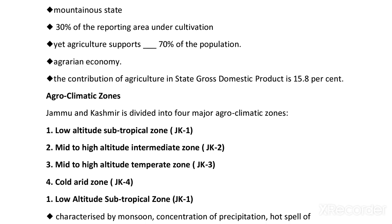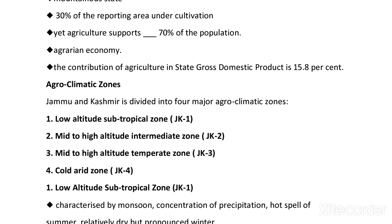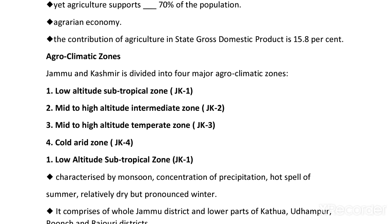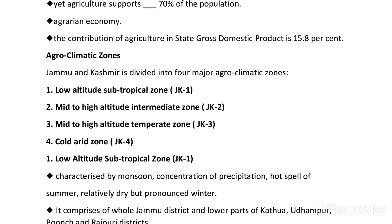In Jammu and Kashmir, there is great diversity in the climate, which is why there is a variety of crops, fruits, vegetables and flowers cultivated. The growth rate of crops is 15.8%.